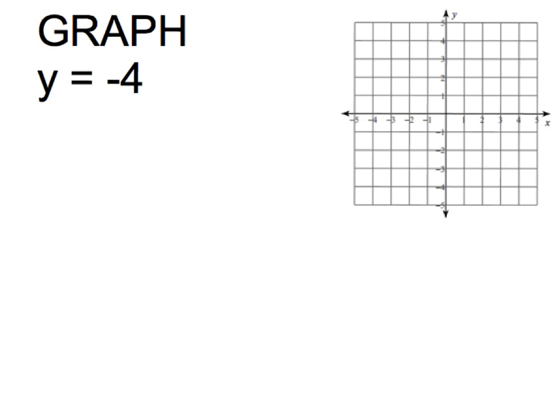So again, my favorite way to graph equations that look like this is using a table. So I'm going to go ahead and set up my xy table and I always start with the value that I know. So I know that y is negative 4. So what I'm going to do then is I'm going to go ahead and I'm going to put in three negative 4s here into my y column.